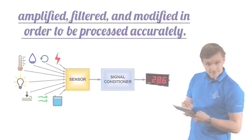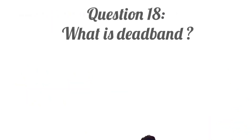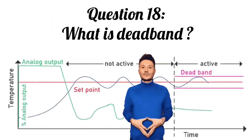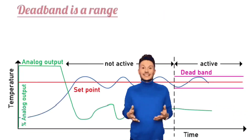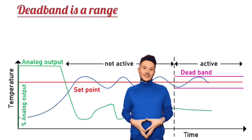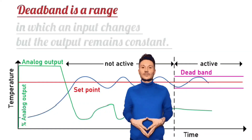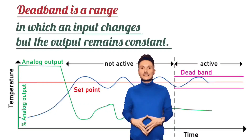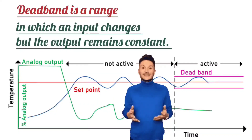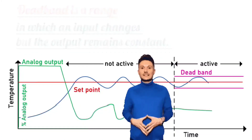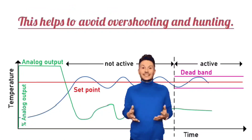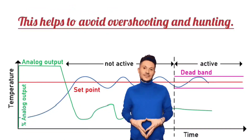Question 18: What is dead band? Dead band is a range in which an input changes but the output remains constant. This helps to avoid overshooting and hunting.